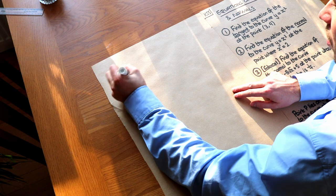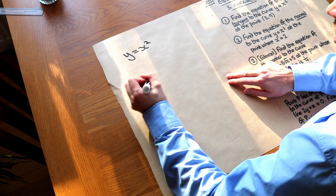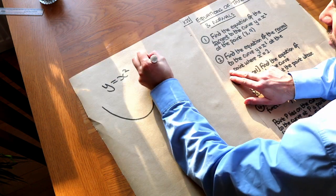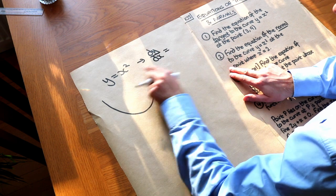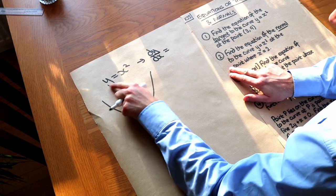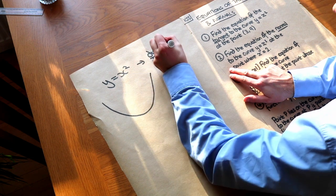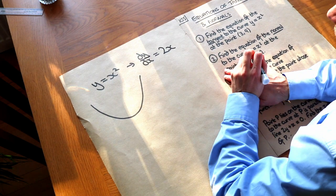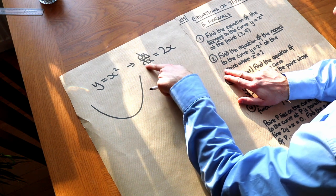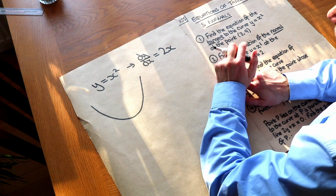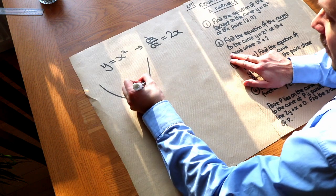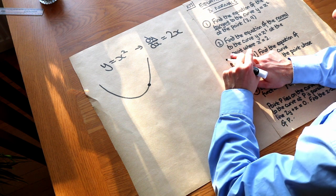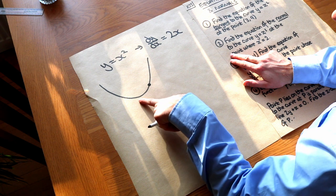Suppose I have an equation y equals x squared and I sketch that equation — it's going to look like this, a kind of smiley face shape. We've already seen how when we differentiate that allows us to find the gradient at a particular point on this curve. If we differentiate y = x², we times by the power so the 2 goes to the front and we reduce the power by 1, giving us 2x. This means that dy/dx is always 2 times whatever the x value is.